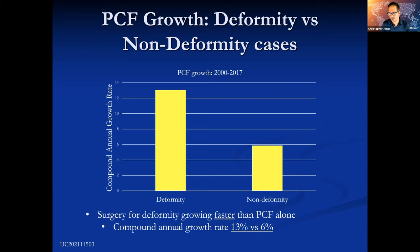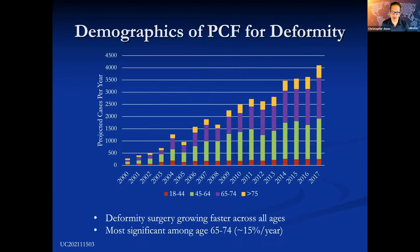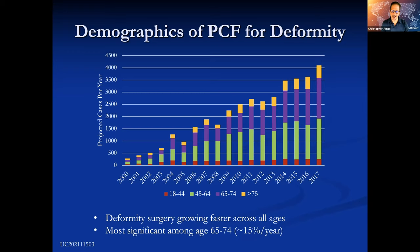As surgeons looking at this population, this is a significant growth area. And just like in the thoracolumbar spine, unfortunately the largest group where this type of surgery seems to be growing is in the older, more frail population. So that generates a whole lot of other issues with complications and even mortality.